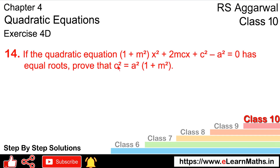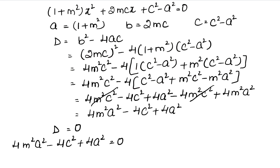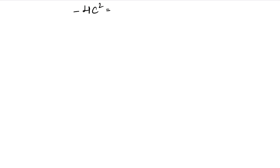Left-hand side is c². So that means the a² values go to the right-hand side. We have to keep c² on one side and take a² values on the other side. The c² values were here: minus 4c². We take it to the other side.